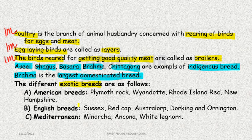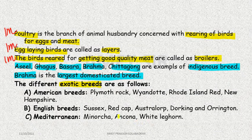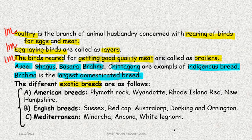American breeds include Plymouth Rock, Wyandotte, Rhode Island Red, and New Hampshire. English breeds include Sussex, Red Cap, Australorp, Dorking, and Orpington. Mediterranean breeds include Minorca, Ancona, and White Leghorn. All of these can be asked in different questions.